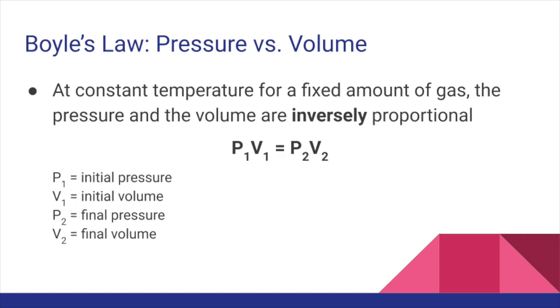Boyle's law is expressed as an equation with P1 times V1 equals P2 times V2, where P1 and V1 are the initial conditions and P2 and V2 are the final conditions. It is important to note that with this equation, as with any equation, the units must agree on both sides. So whatever volume and pressure units you use on one side of the equation, you'll need to use the exact same units on the other side.